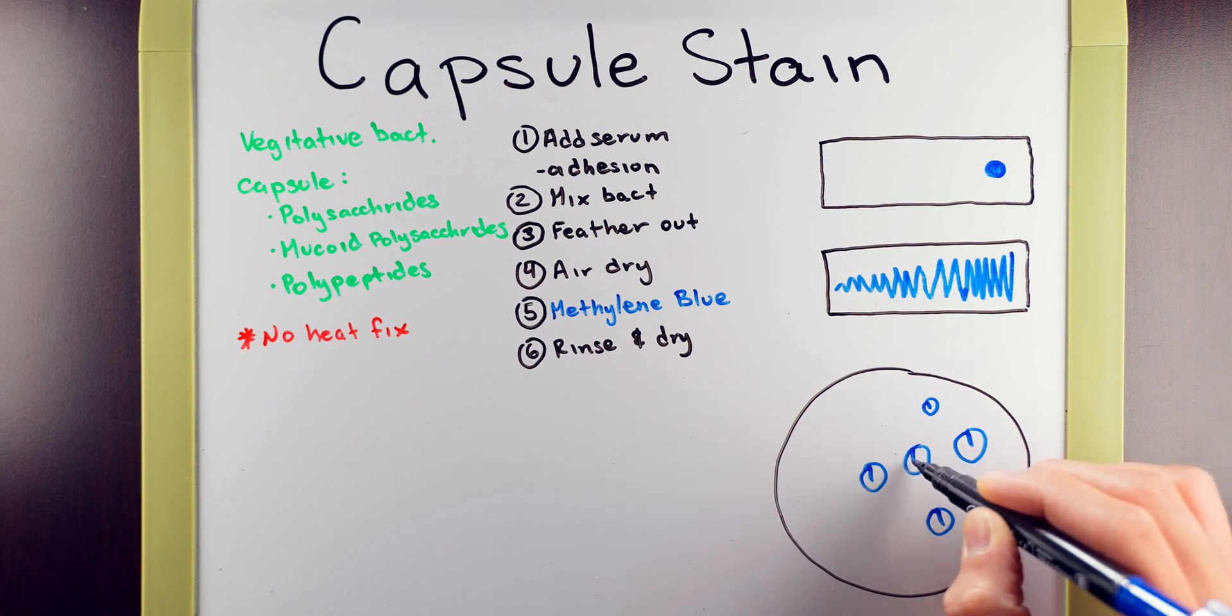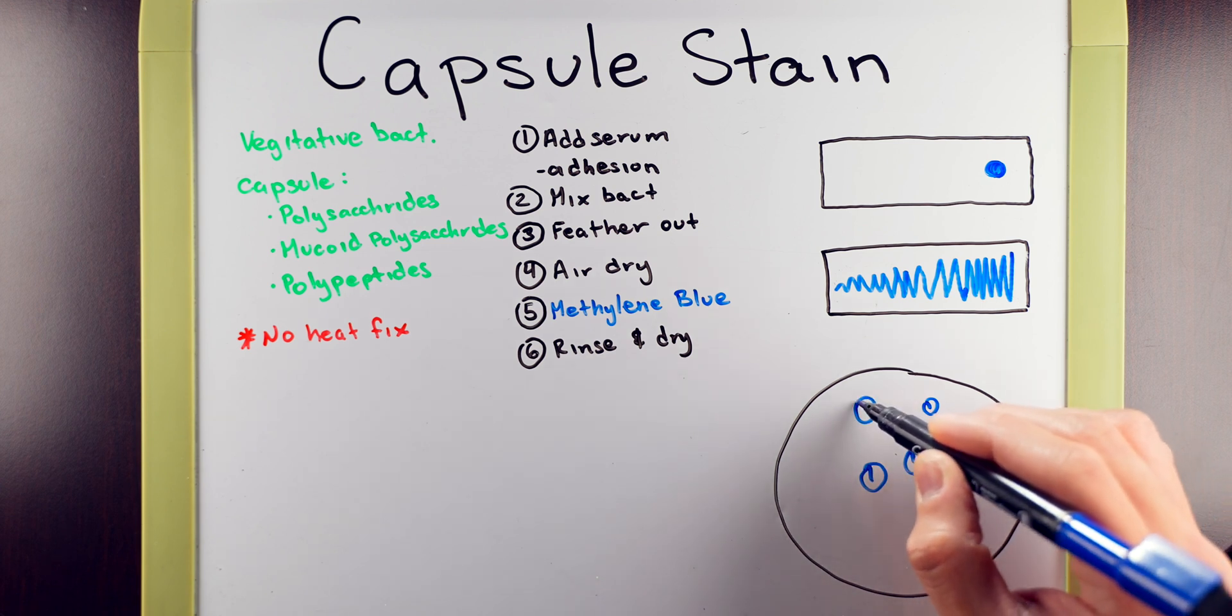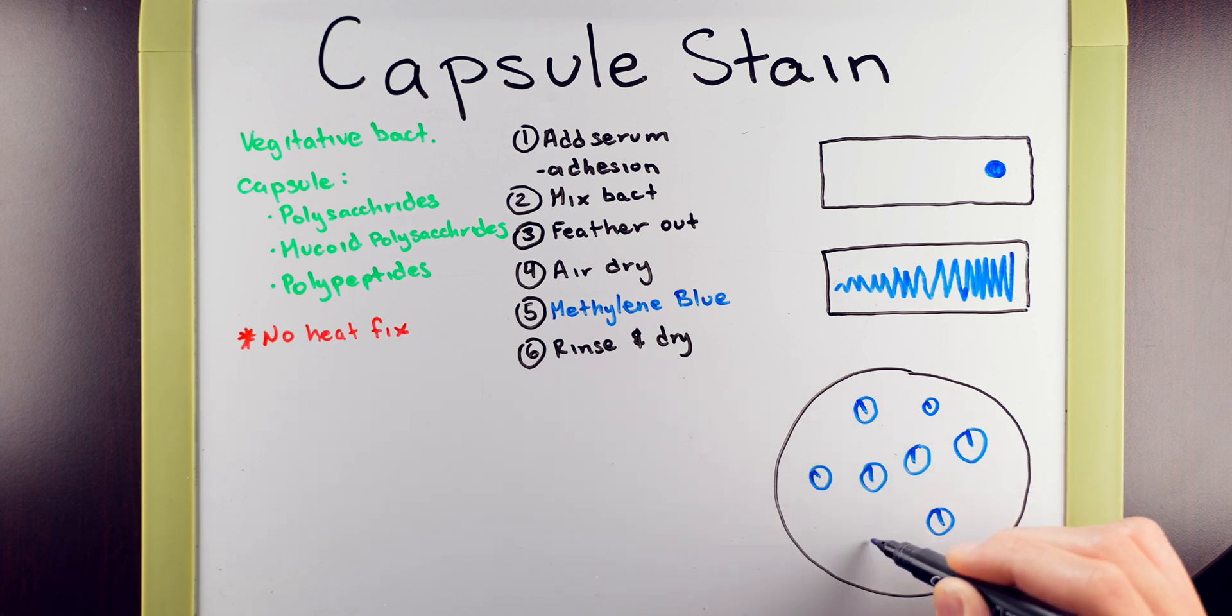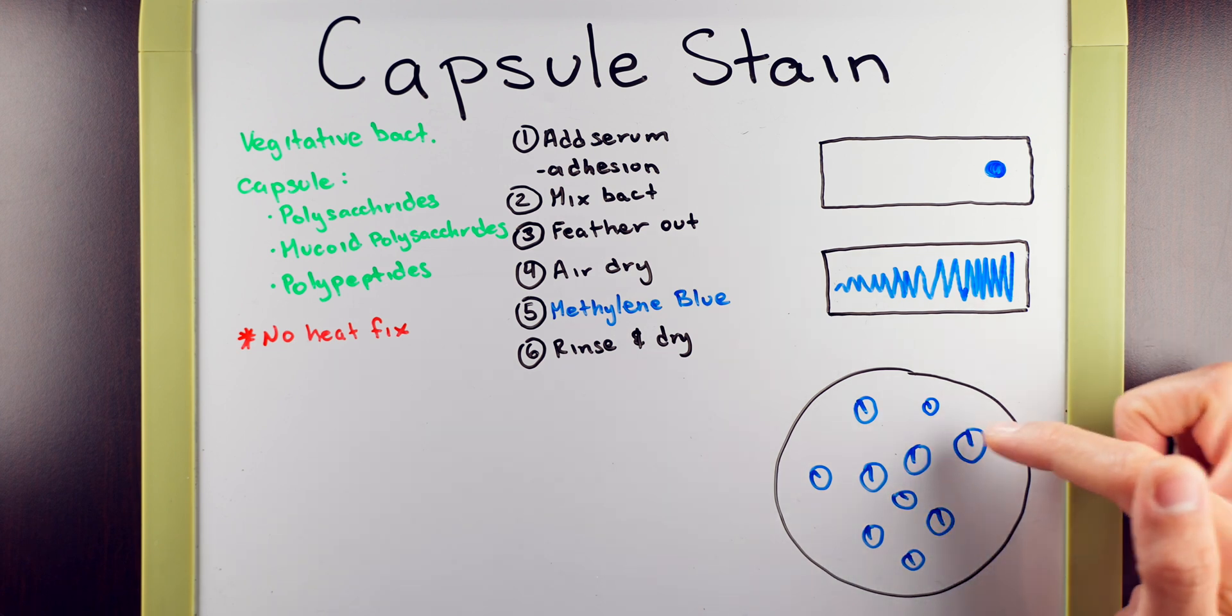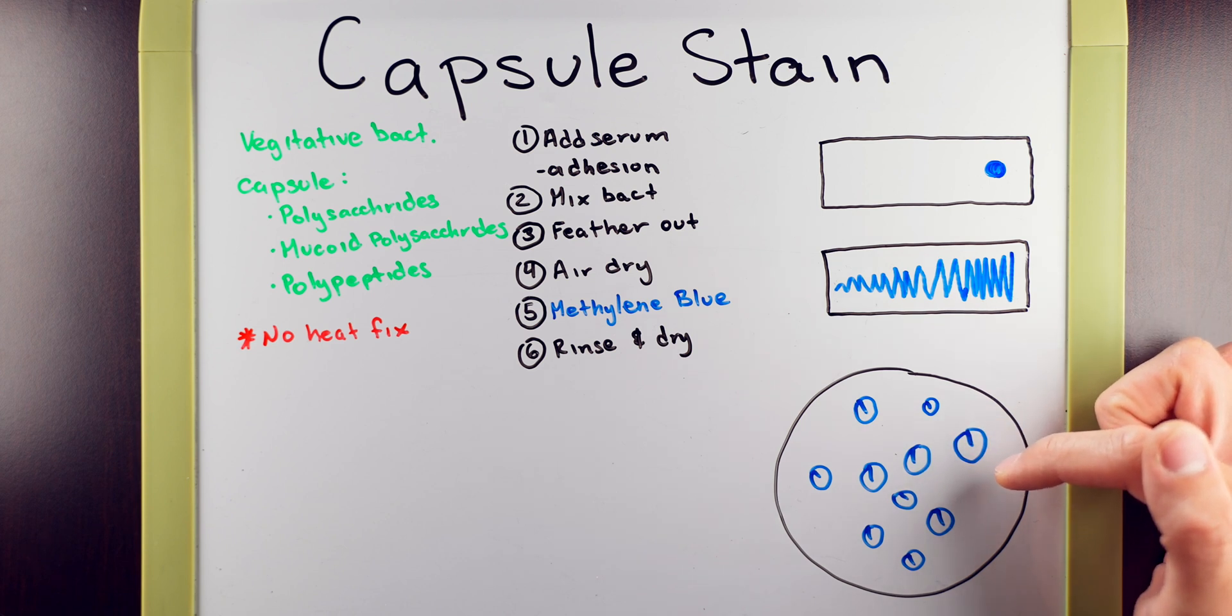You might be wondering, this isn't like any bacteria that I've seen before. I'm normally used to seeing the circles, the rods, or the spirals. And what is this? Well, this circle here is actually the capsule, and that line inside is the vegetative bacteria.